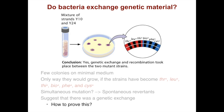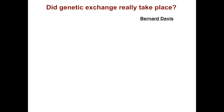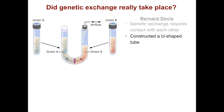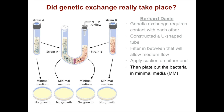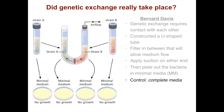To prove this, Bernard Davis came up with a chamber to test whether genetic exchange requires contact between the two strains. He constructed a U-shaped tube with a filter in between that allows medium to flow through but prevents bacteria from touching. They applied suction to either end to ensure media was flowing through the bacterial culture, then plated the results. What they got was no growth — even though previously recombination had occurred producing wild-type colonies, in this case no wild-type colonies appeared. Controls with complete media showed colonies, but none on the minimal media.